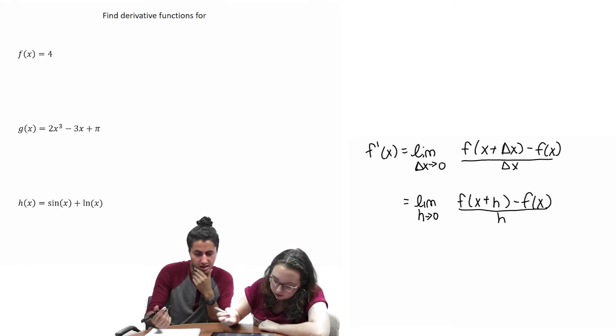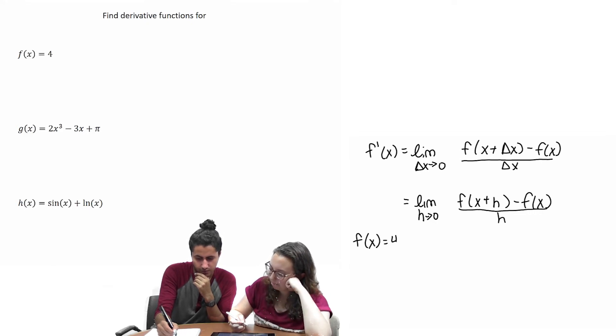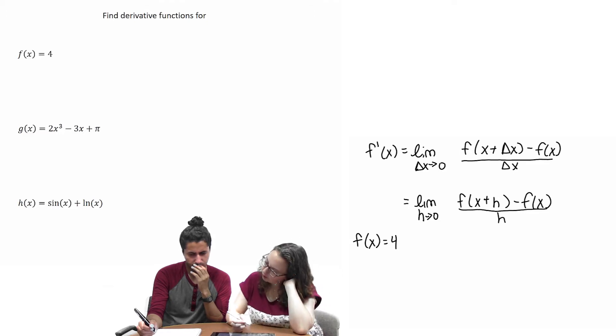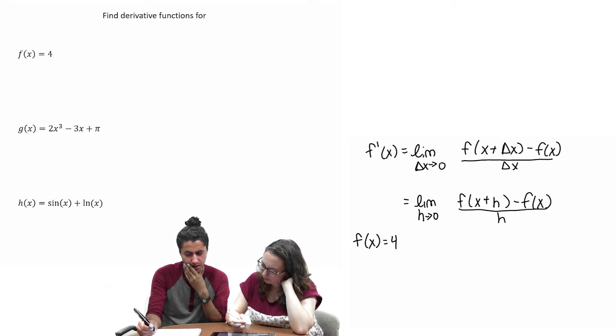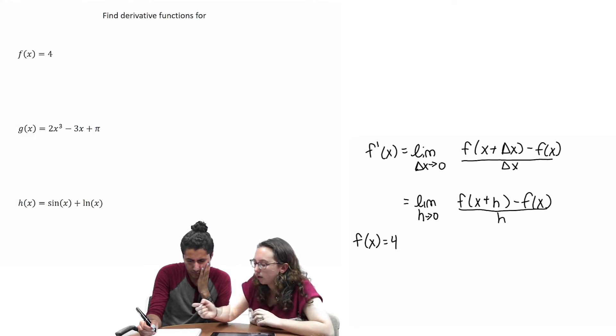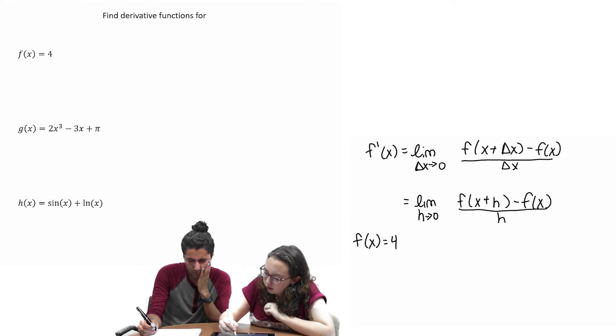So, what's the first one? f of x equals 4. Okay. So, we have f of x equals 4. So, we have to plug the equation. But there's no x. Yeah. I don't know what... I think if we do the normal steps that we know, I think... Because then it would end up being...